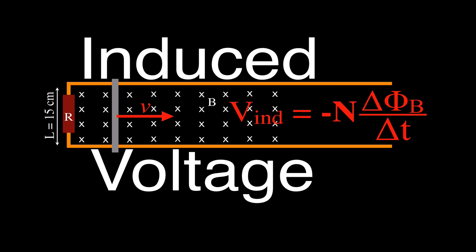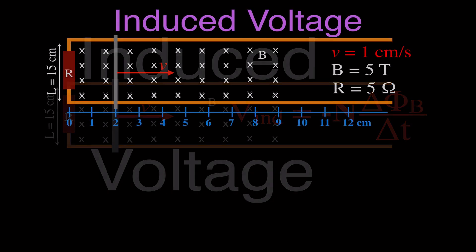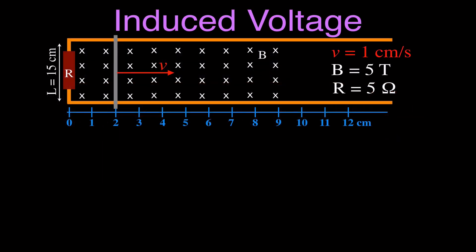In today's video, we are going to be going over another example problem talking about induced voltage and calculating the induced voltage. This is the situation that we have. We have this metal bar, which is sitting on top of these metal railings, which have this resistor connected to them, and we're going to have a circuit through this bar and those metal railings. There's a distance across